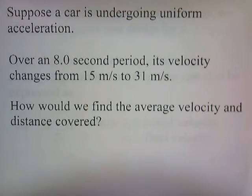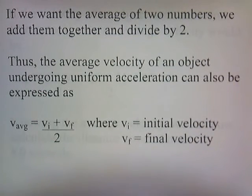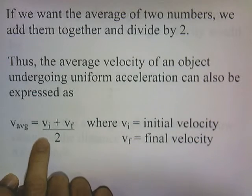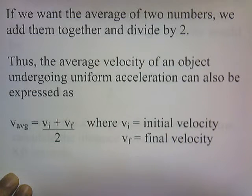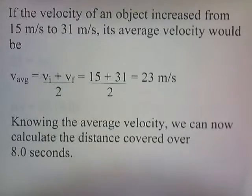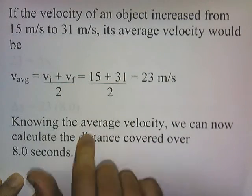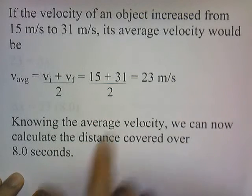Now suppose a car is undergoing uniform acceleration. Over an 8-second period, its velocity changes from 15 meters per second to 31 meters per second. How would we find the average velocity and the distance covered? If we want the average of two numbers, we add them together and divide by 2. Thus, the average velocity can be expressed as v-average equals vi plus vf divided by 2, where vi is the initial velocity and vf is the final velocity. So if the velocity increased from 15 to 31 meters per second, the average velocity is 15 plus 31 divided by 2, which gives 23 meters per second.